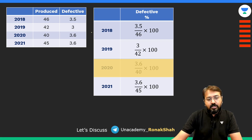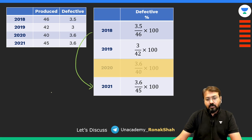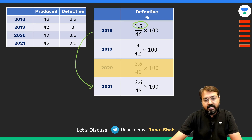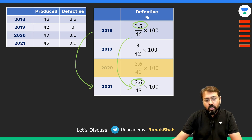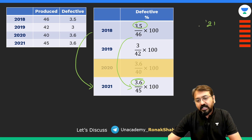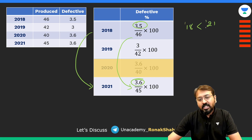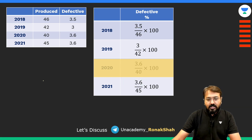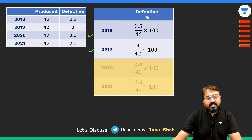Similarly, if I compare 2018 with 2021, you can see that from 2018 to 2021 the numerator is increasing while the denominator is going down. So definitely 2021 should have more defects than 2018, meaning 2021 cannot be our answer. So let's eliminate 2021 as well. We are left with just these two years.